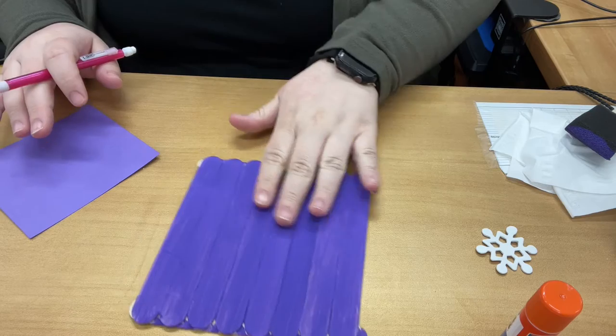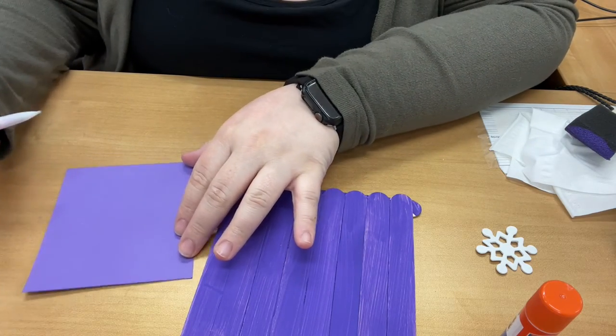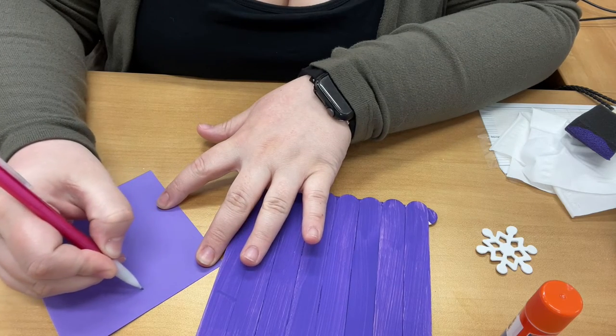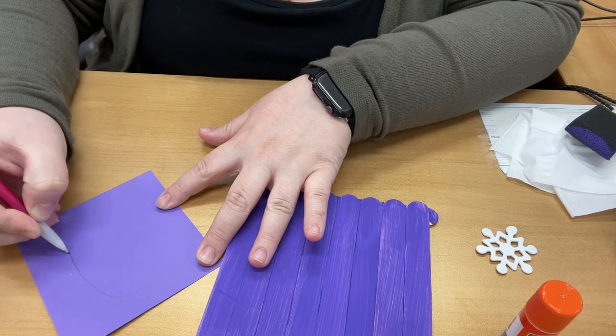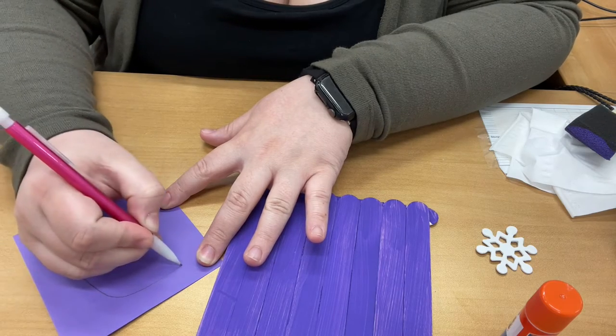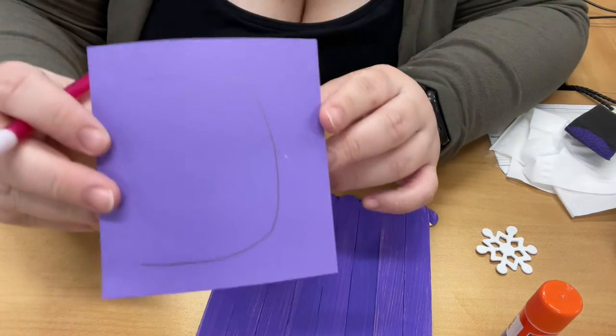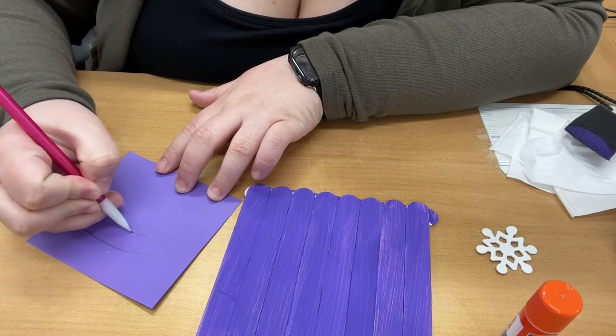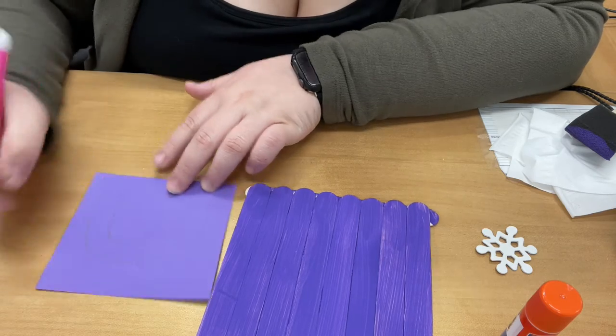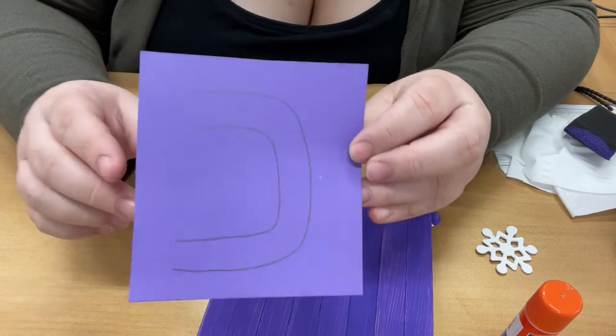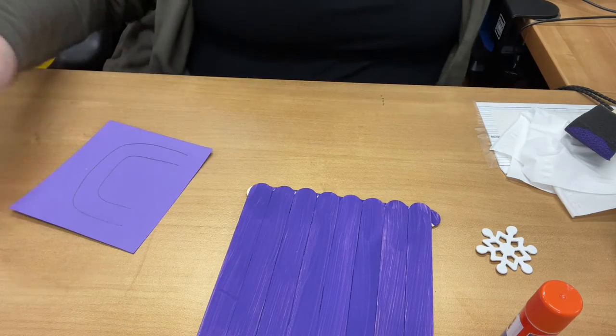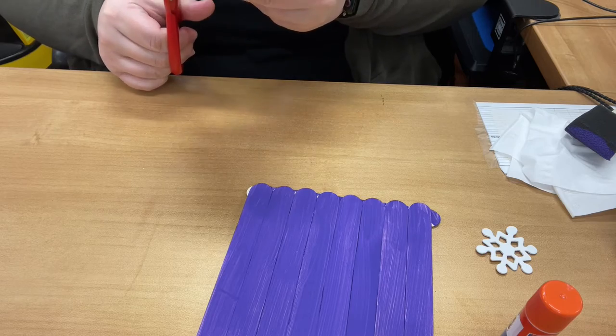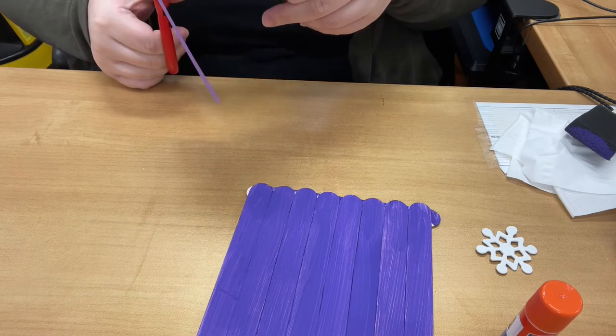Once this is painted and dry, you're going to want to take your purple paper and then we're going to make a handle. So I like to make a backward C. So it looks like that. And then to make the handle, you just make a smaller one on the inside. See, and then you're going to cut it out.